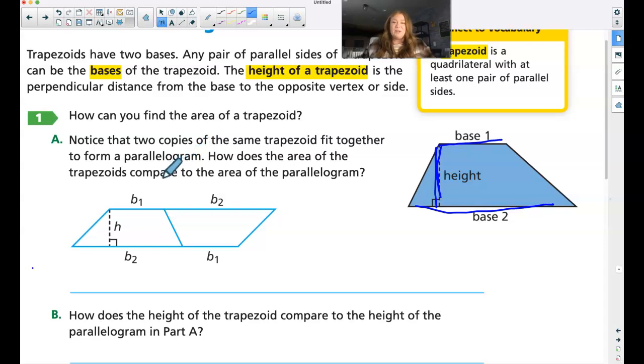How does the area of trapezoids compare to the area of a parallelogram? A parallelogram is going to be base times height. So to find a trapezoid, I would have to cut that back in half.